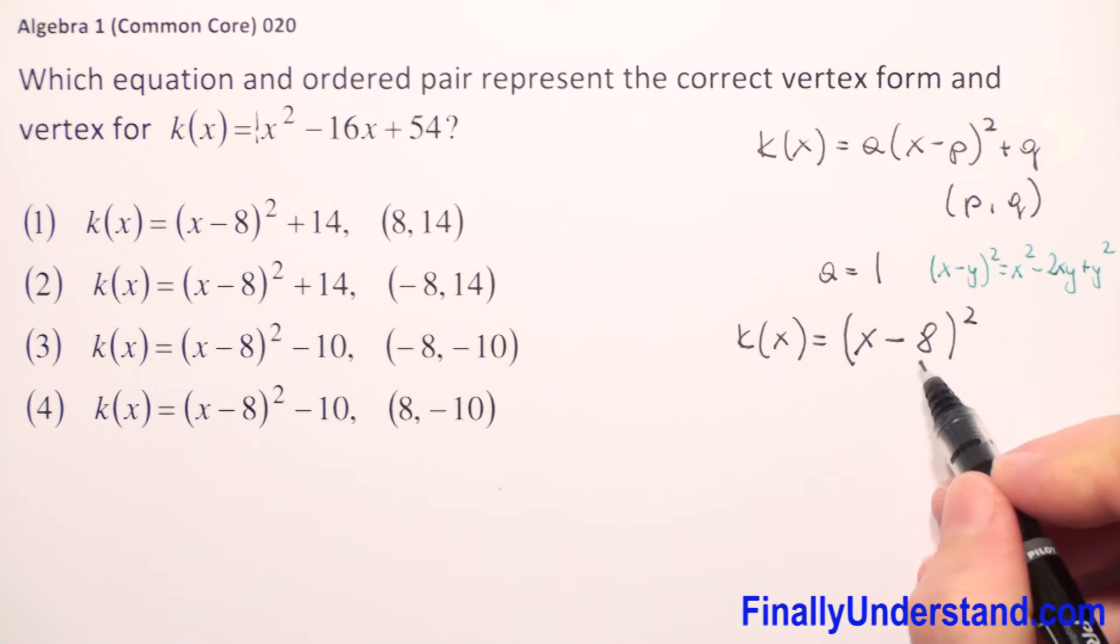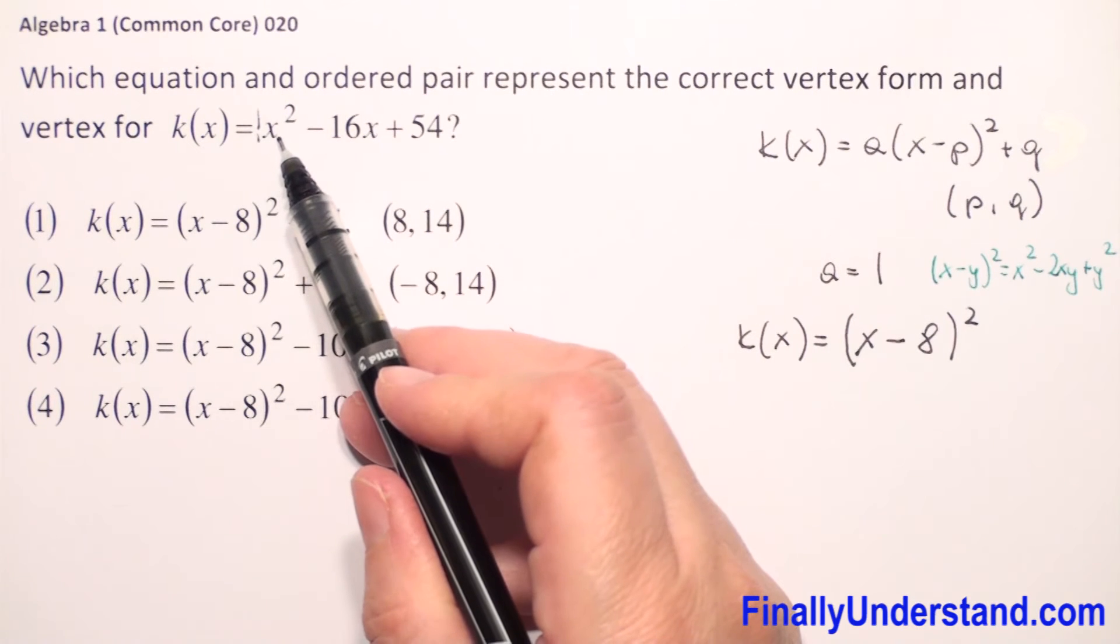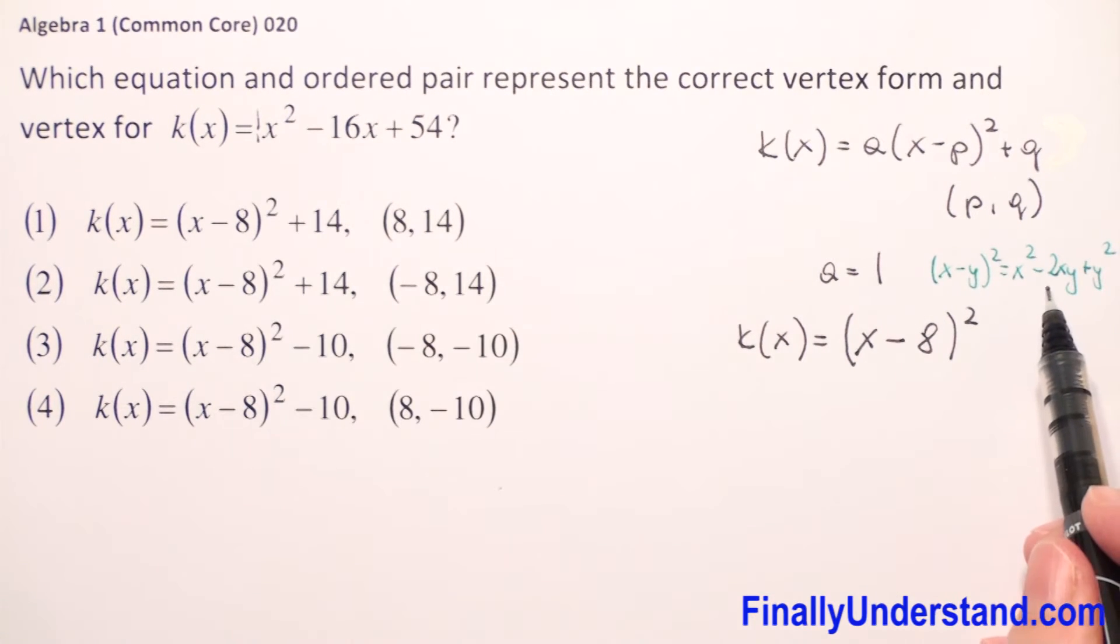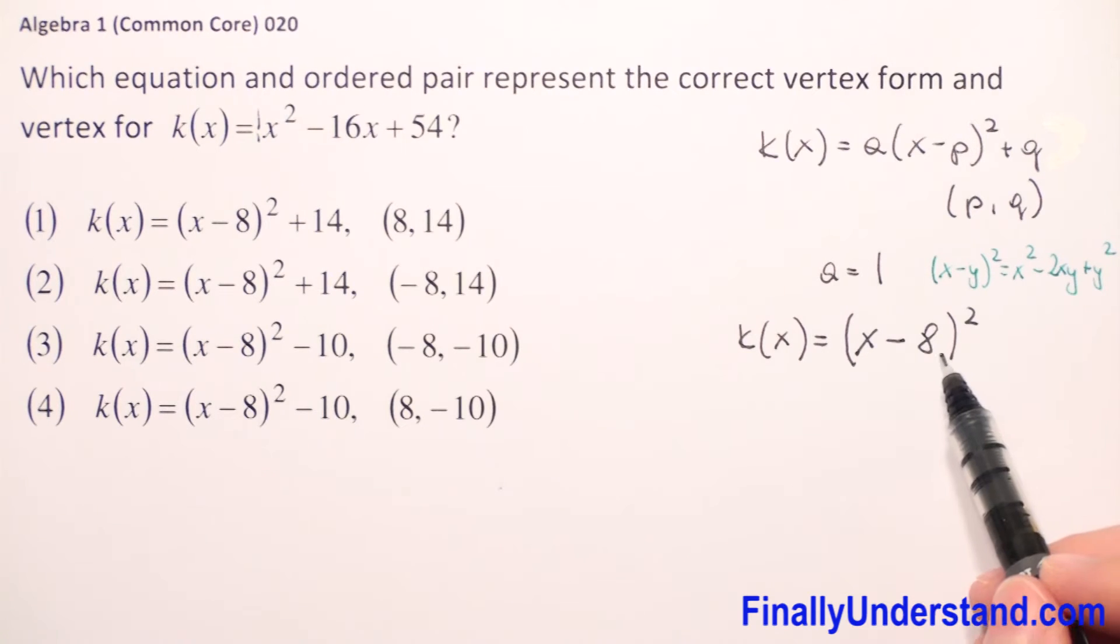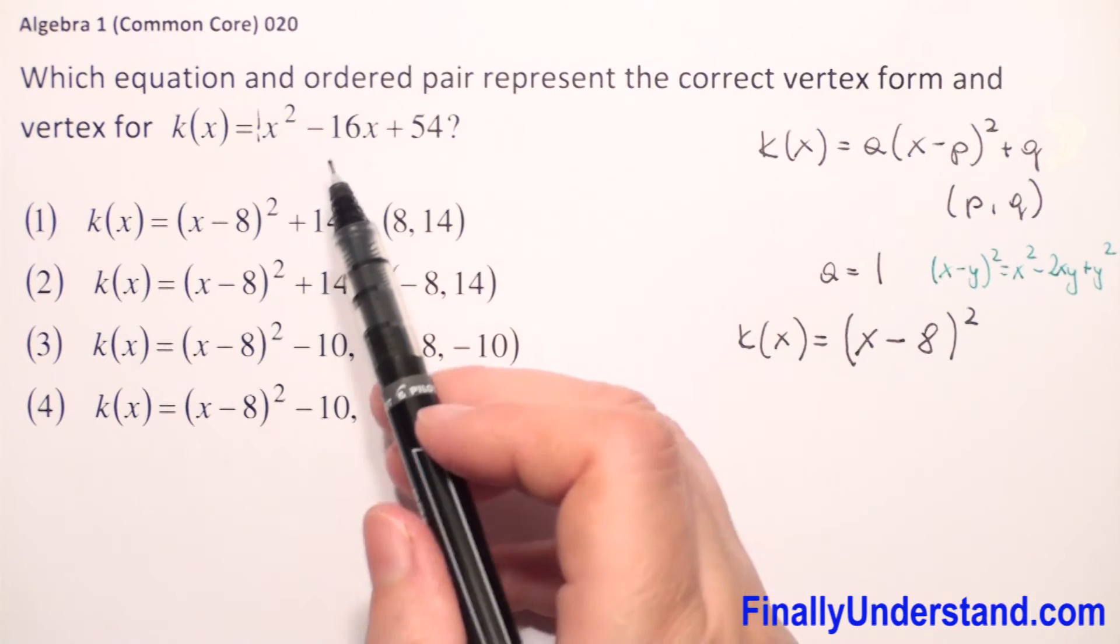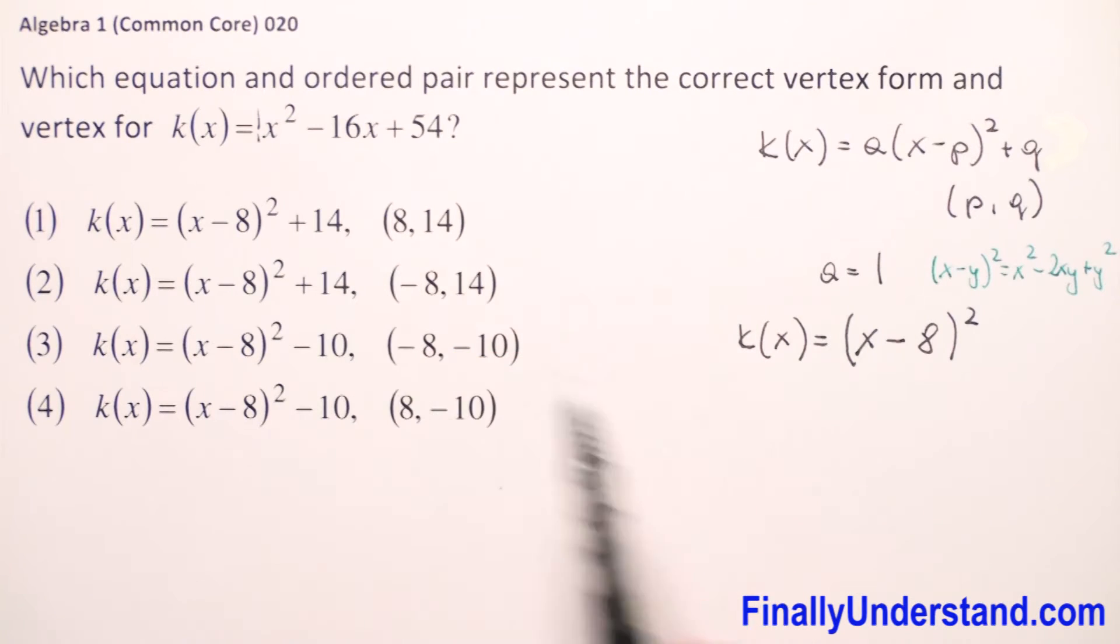So x to the second power, it will be x to the second power we have here. Next we have 2 times xy, so 2 times x times 8, which will be 16. Everything is okay. We copy the negative sign.